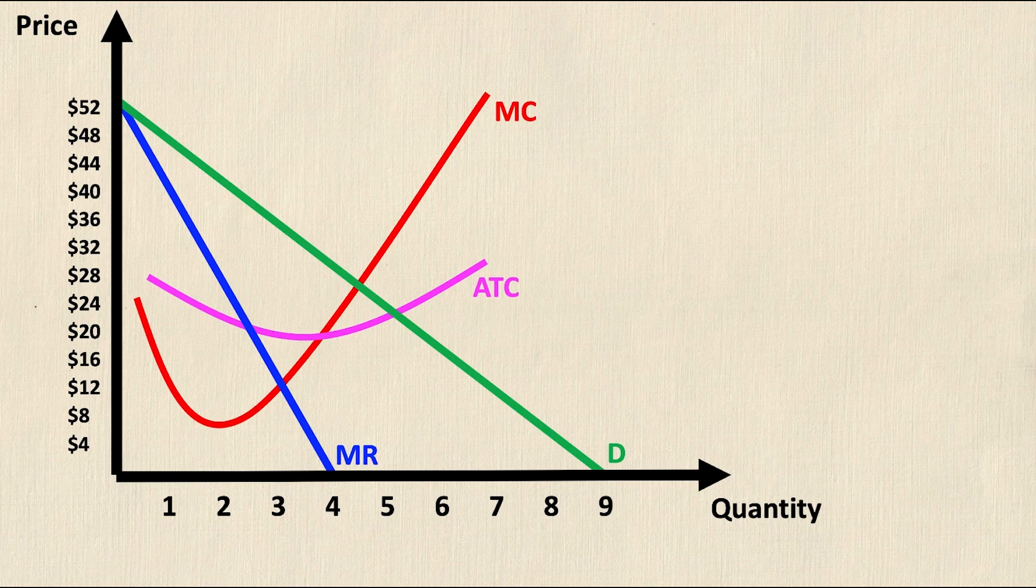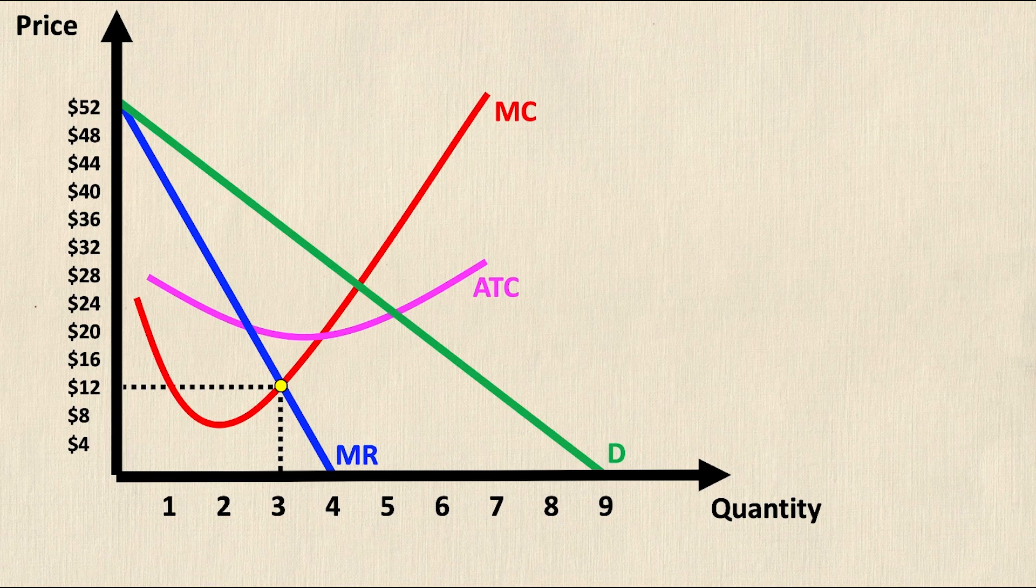Now we know that if this was perfect competition then we would consume at an equilibrium point where marginal revenue intersects with marginal cost and in this case that is a point where the quantity is 3 and the price is $12.